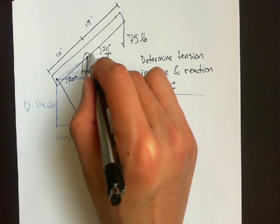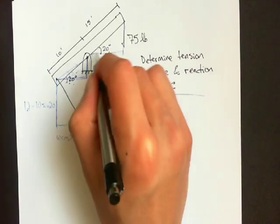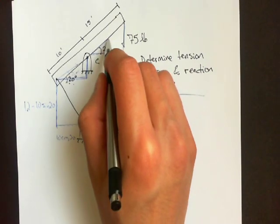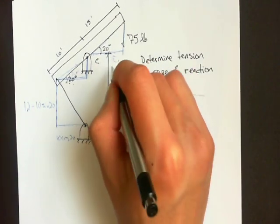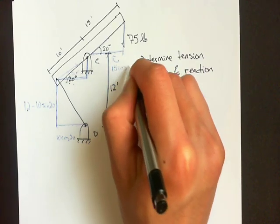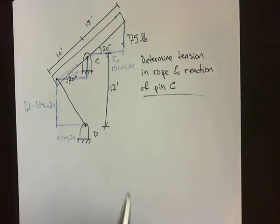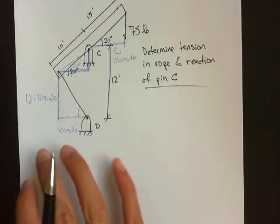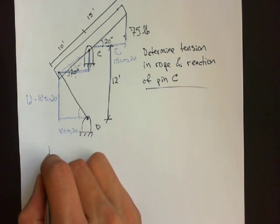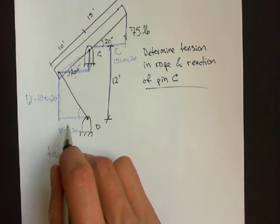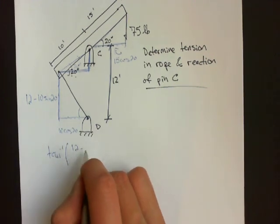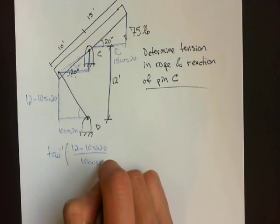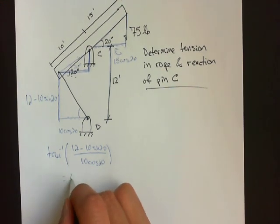And over here, we can draw our second triangle right here. This leg is equal to adjacent over hypotenuse, so it's 15 cosine 20. And if we're given this side and this side, we can find this angle. So this angle is equal to inverse tangent of opposite over adjacent, so 12 minus 10 sine 20 over 10 cosine 20, which gives you 42 degrees.